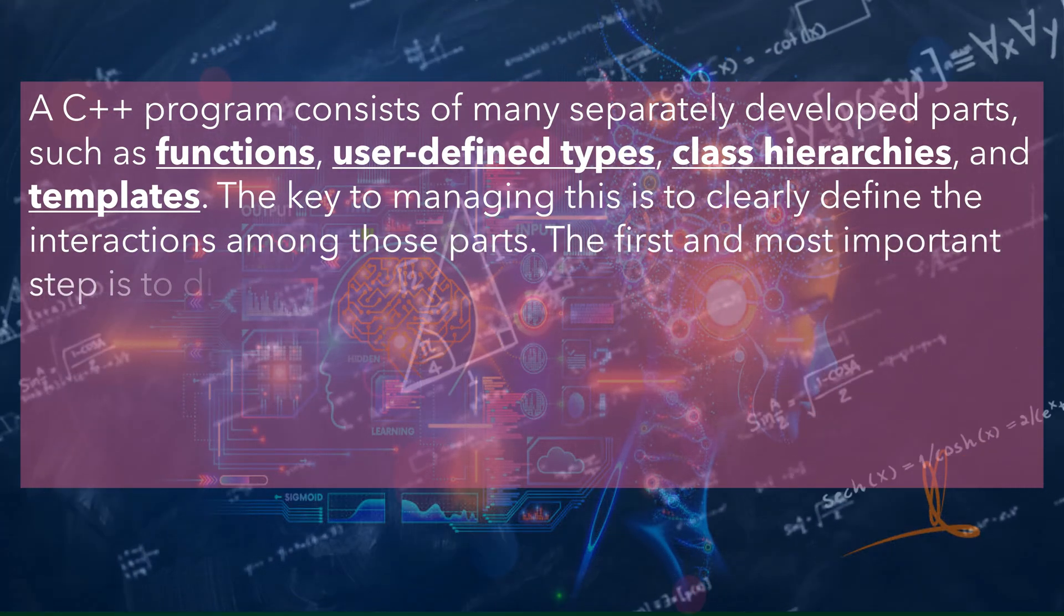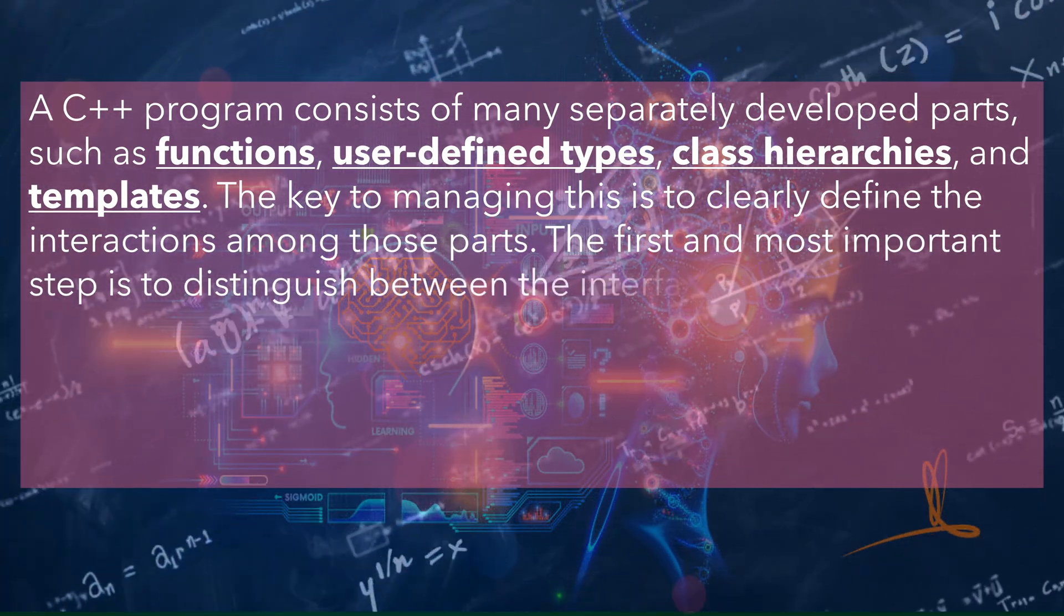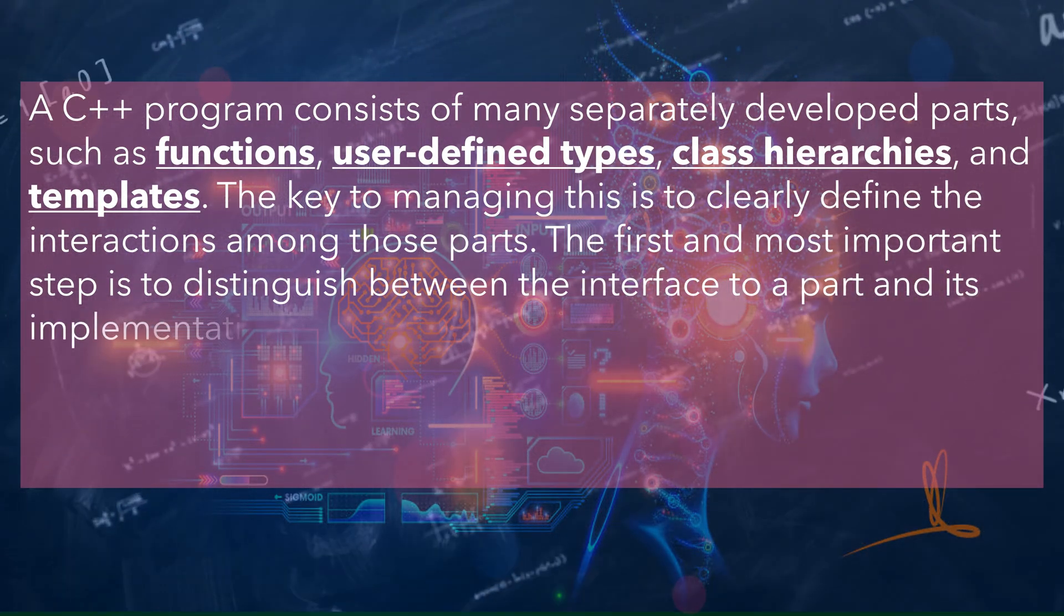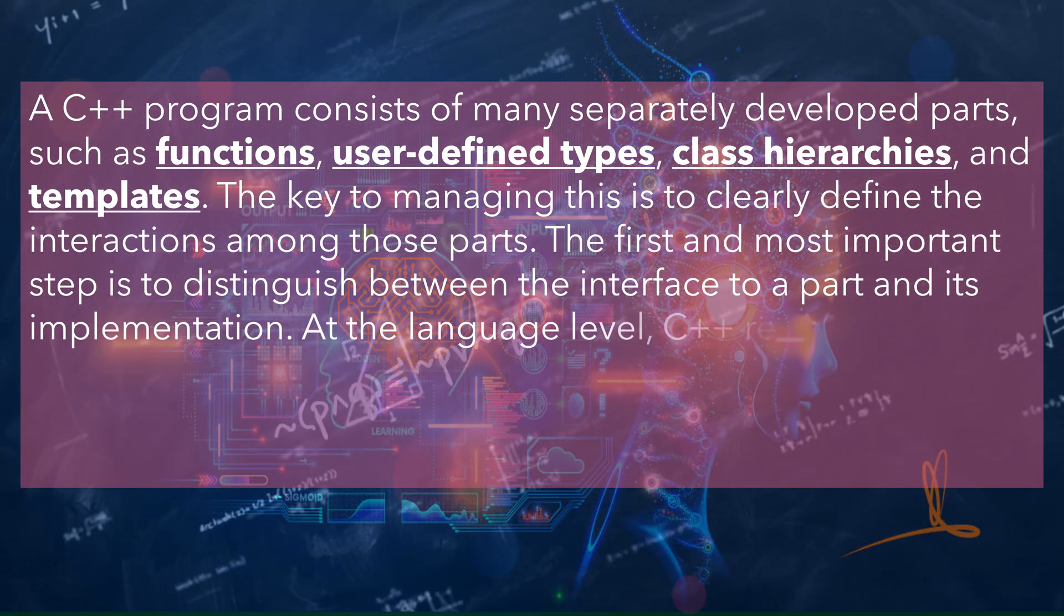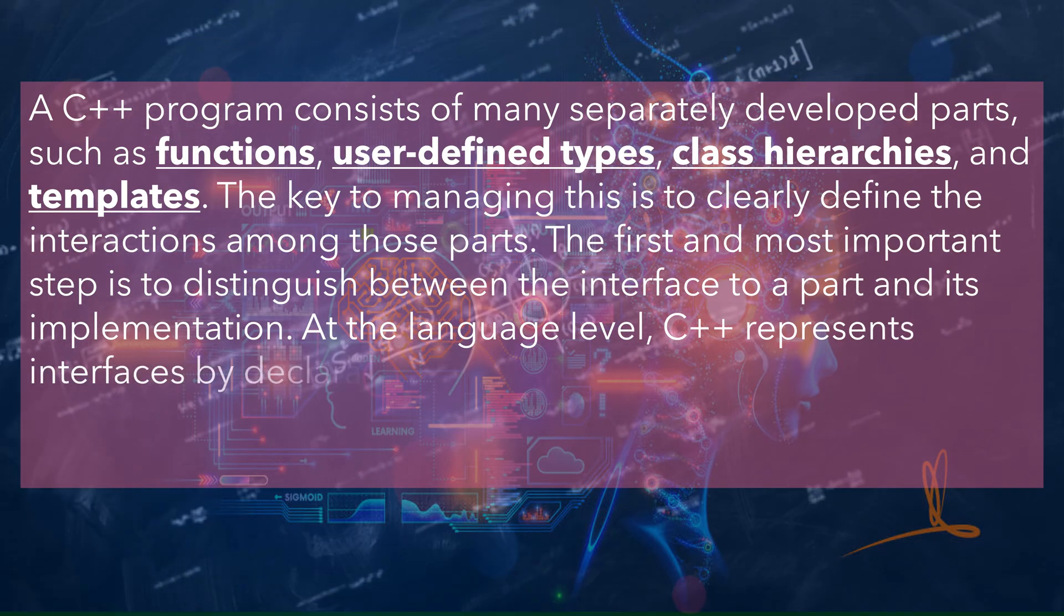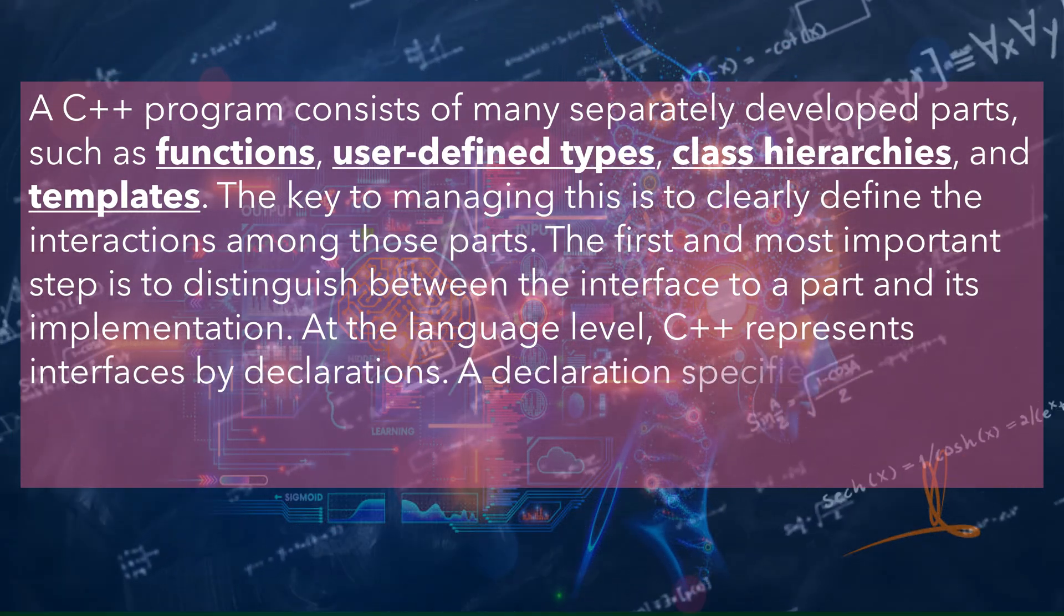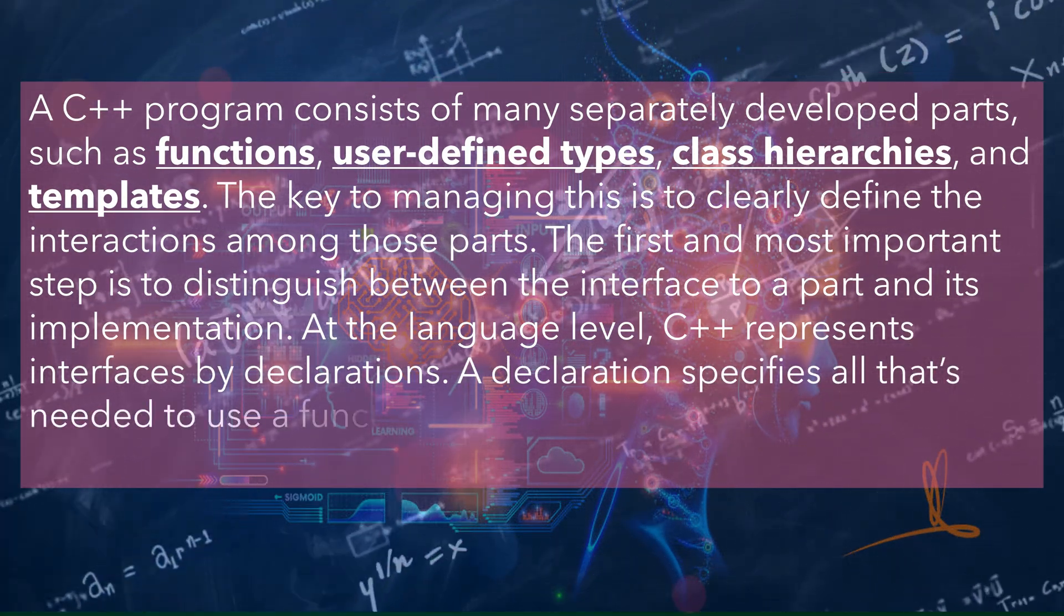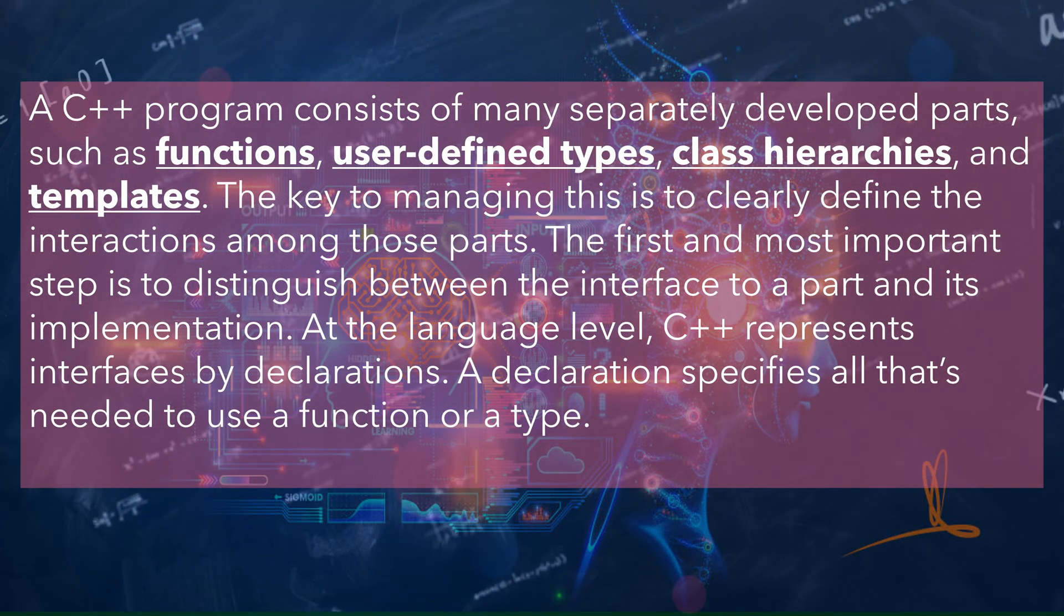The first and most important step is to distinguish between the interface to a part and its implementation. At the language level, C++ represents interfaces by declarations. A declaration specifies all that's needed to use a function or a type.